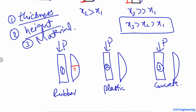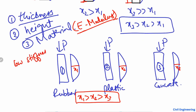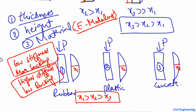So x1 is higher than x2, and x2 is higher than x3. This is because material stiffness — the elastic modulus — matters. The more stiff the material, the less it will buckle. A lower elastic modulus means lower stiffness, which means more buckling. A higher stiffness material will show low buckling under the same load. So material stiffness and elastic modulus are also very important in determining buckling.